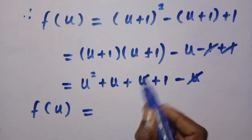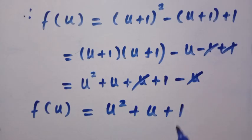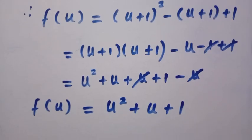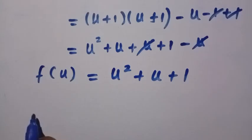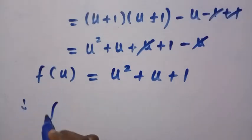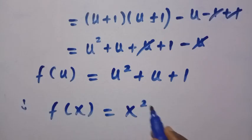Therefore we have f of u equals, we have minus u plus u cancelled, then this is u squared plus u plus 1. So this is what we have for f of u.